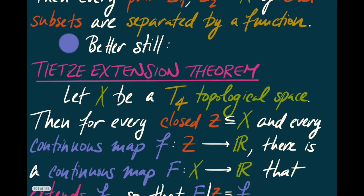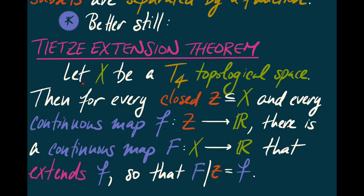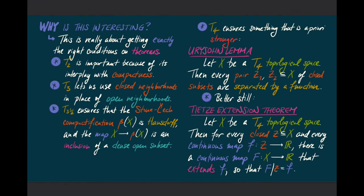Even better, we have the Tietze extension theorem: if we have a T4 topological space X, a closed subset Z, and a continuous map f from Z to the real line, then we can extend it to a continuous map F from all of X to the real line such that F restricted to Z equals f. In the next two lectures, we'll prove the Urysohn lemma and the Tietze extension theorem. We'll first prove the Urysohn lemma and then use it to prove the Tietze extension theorem.